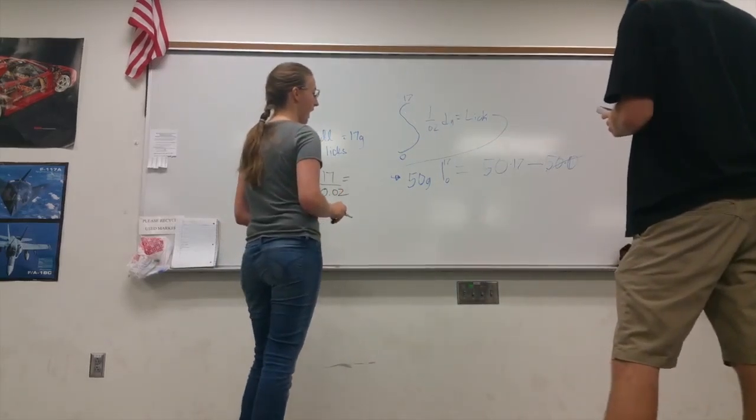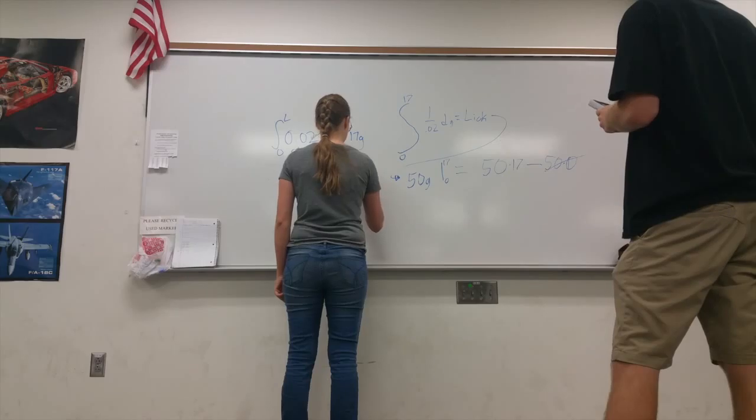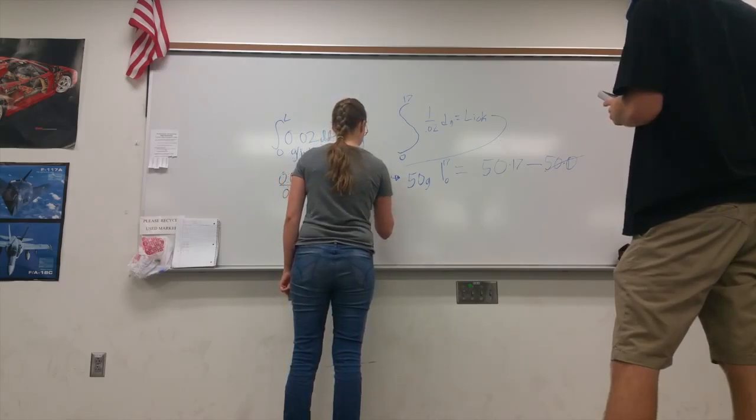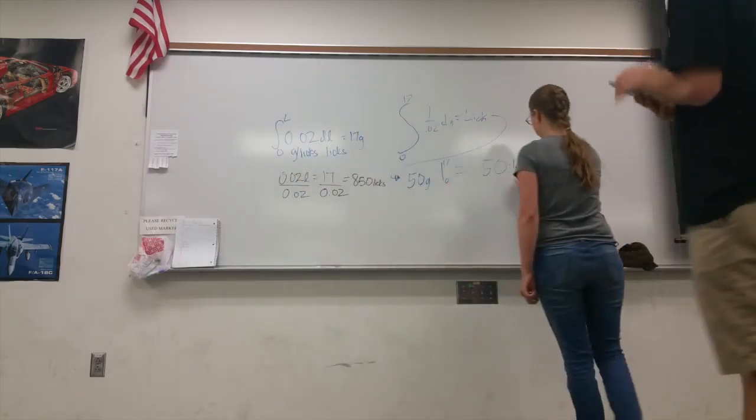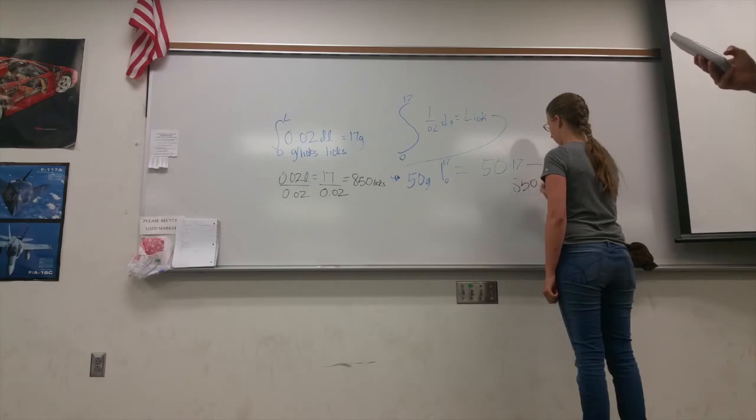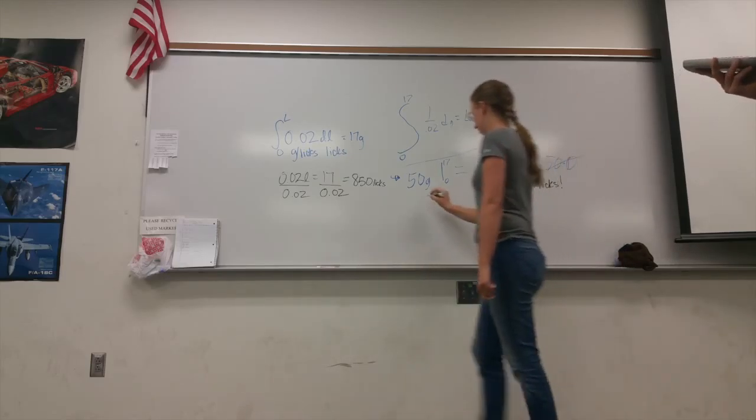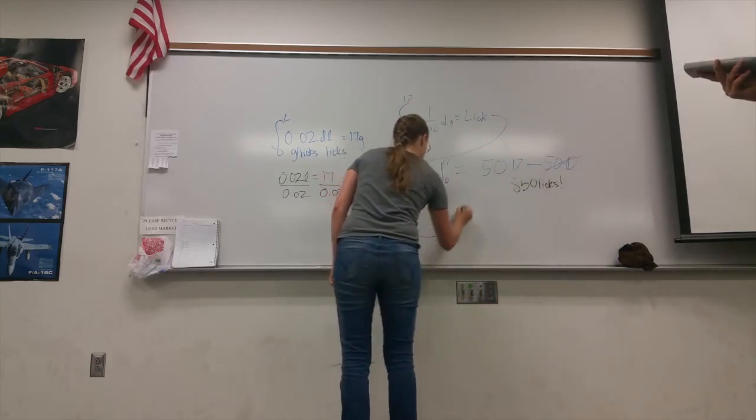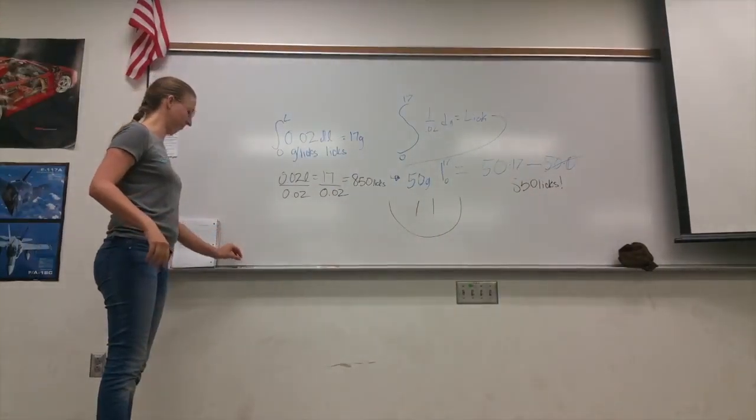So 17 divided by 0.02 is equal to 850. And then 50 times 17 is equal to 850. So the licks to get to the center of a Tootsie Pop is 850 licks. Impressive. All right, how silly was that?